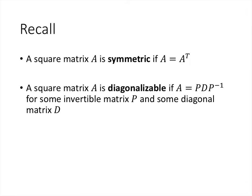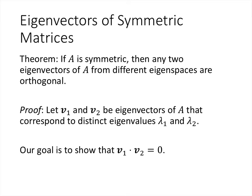Also recall that a matrix is diagonalizable if we can write it in the form P D P inverse, where D is a diagonal matrix and P is an invertible matrix. Something else to recall is that not every matrix is diagonalizable. When we talk about diagonalization, we're thinking about eigenvalues — the entries in the diagonal of D are eigenvalues for the matrix A that we want to diagonalize.